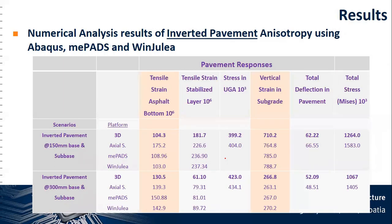Looking at the inverted pavements — the anisotropy — based on the arrangement and the different layers used, you will discover that the tensile strain at the bottom of the asphalt actually increases while the vertical strain in the subgrade actually reduces. This tells us that if we compare both the flexible and inverted pavement, flexible will actually perform better in terms of fatigue cracking. But when talking about the vertical strain in the subgrade, the inverted pavement actually performs better — so in terms of rutting, the inverted pavement performs better.